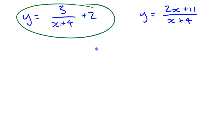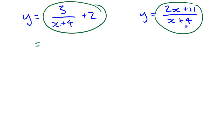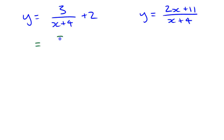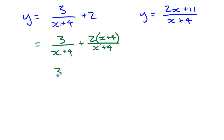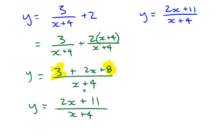We're going to start with three over x plus four, plus two, and see if we can change it algebraically to look like the single-fraction form. If you've done any work with rational expressions, it's not too hard. We have two separate parts, and we want to combine them into a single fraction by making a common denominator. Multiply the two by x plus four over x plus four, expand the top to get two x plus eight, then put everything over x plus four. Combining gives us two x plus eleven over x plus four.